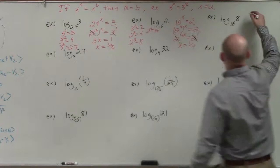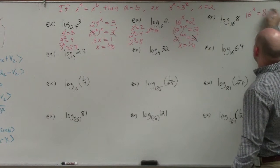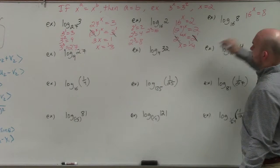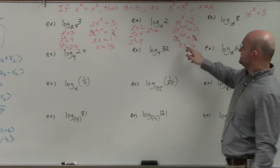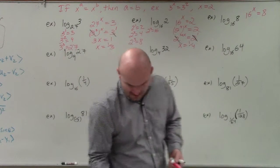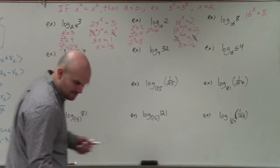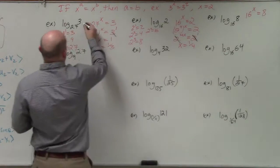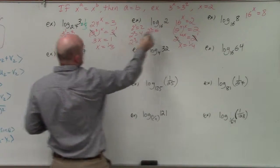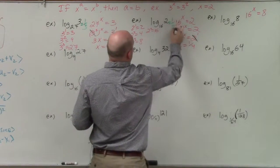For the next one, I can do 16 raised to what value is going to leave me with 8? So log base 27 of 3 is one-third, and log base 16 of 2 is one-fourth. Now for log base 16 of 8, I need to rewrite 16 and 8.